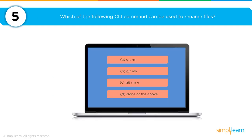Which CLI command would you use to rename a file? The options are git rm, git mv, git rm -r, or none of the above. The answer is git mv.